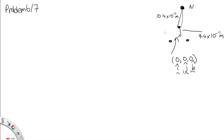We're told the distance between the center of the triangle and each hydrogen atom is 9.4 × 10⁻¹¹ meters. The nitrogen atom is located above this equilateral triangle, and the distance between a hydrogen atom and the nitrogen atom is 10.14 × 10⁻¹¹ meters. The question asks: relative to the nitrogen atom, where is the center of mass of the system?